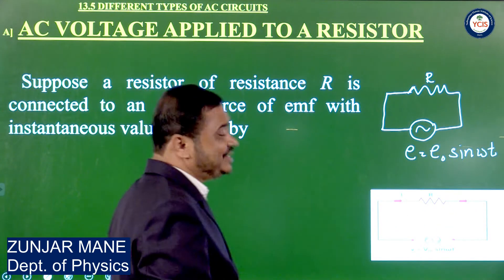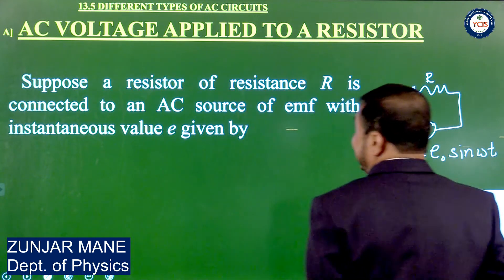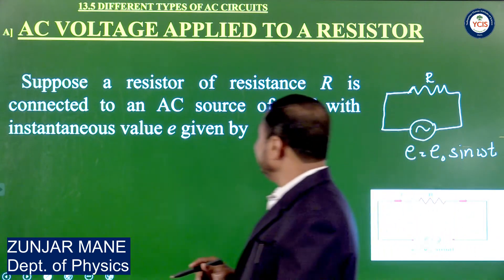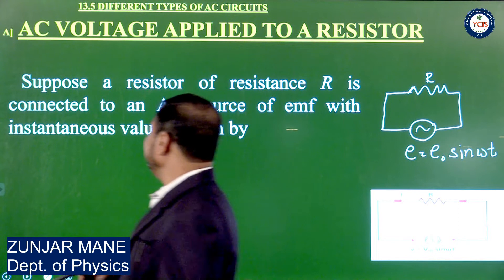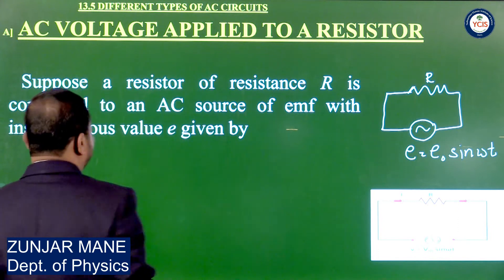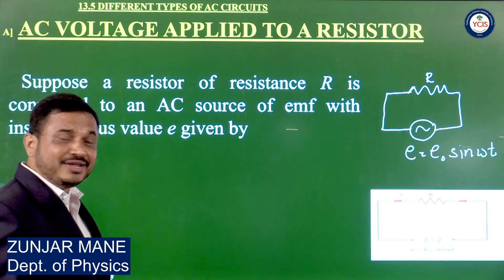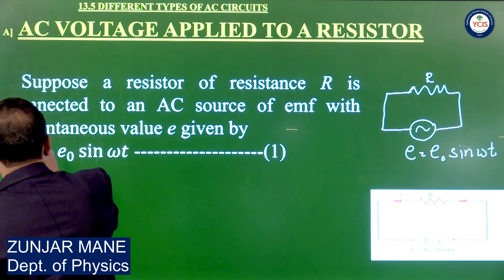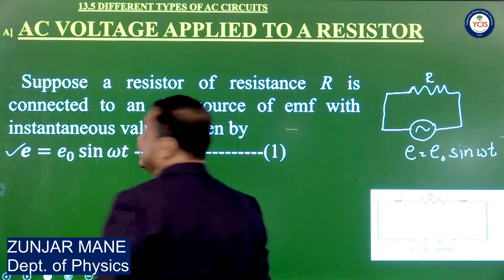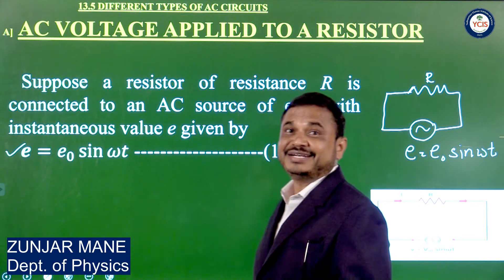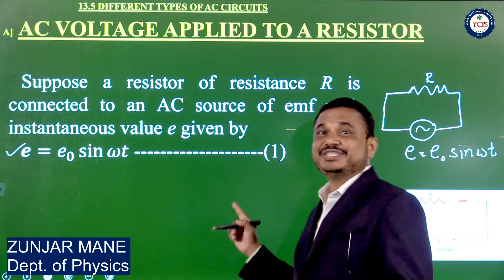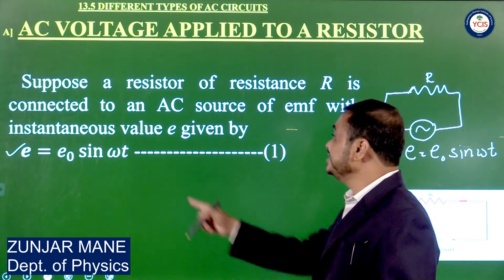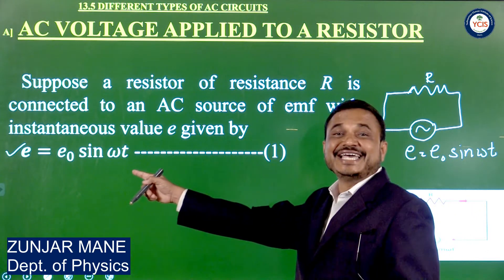Suppose a resistor R is connected to an AC EMF given by E0 sin omega T. The instantaneous value of E is given by the equation E = E0 sin omega T. This EMF is not constant but varies with the sine function.